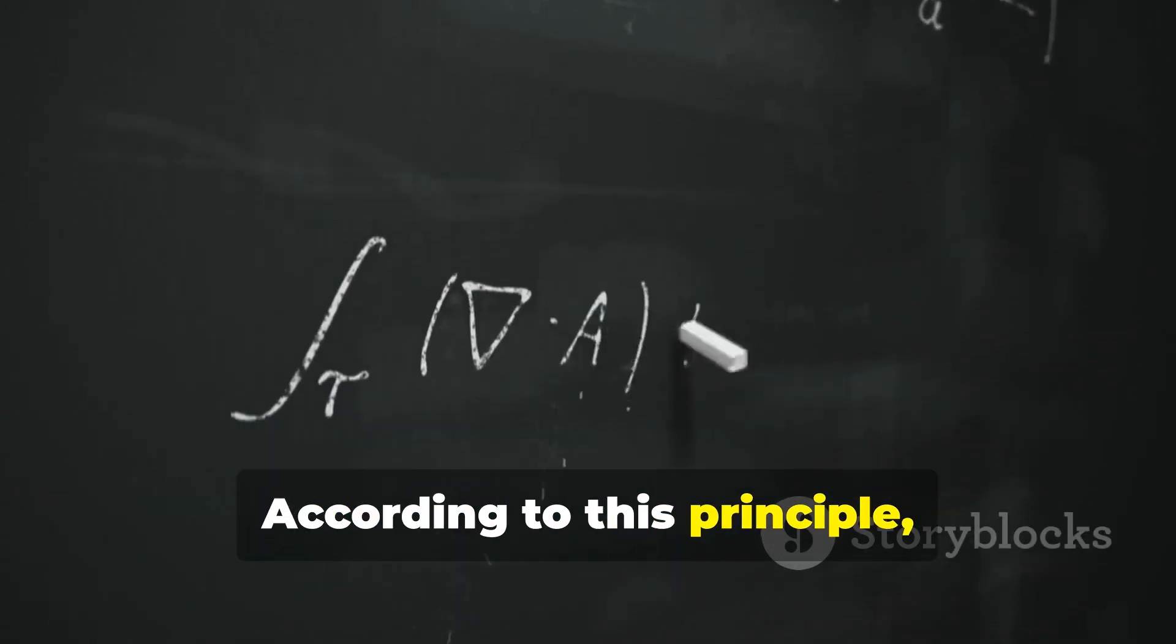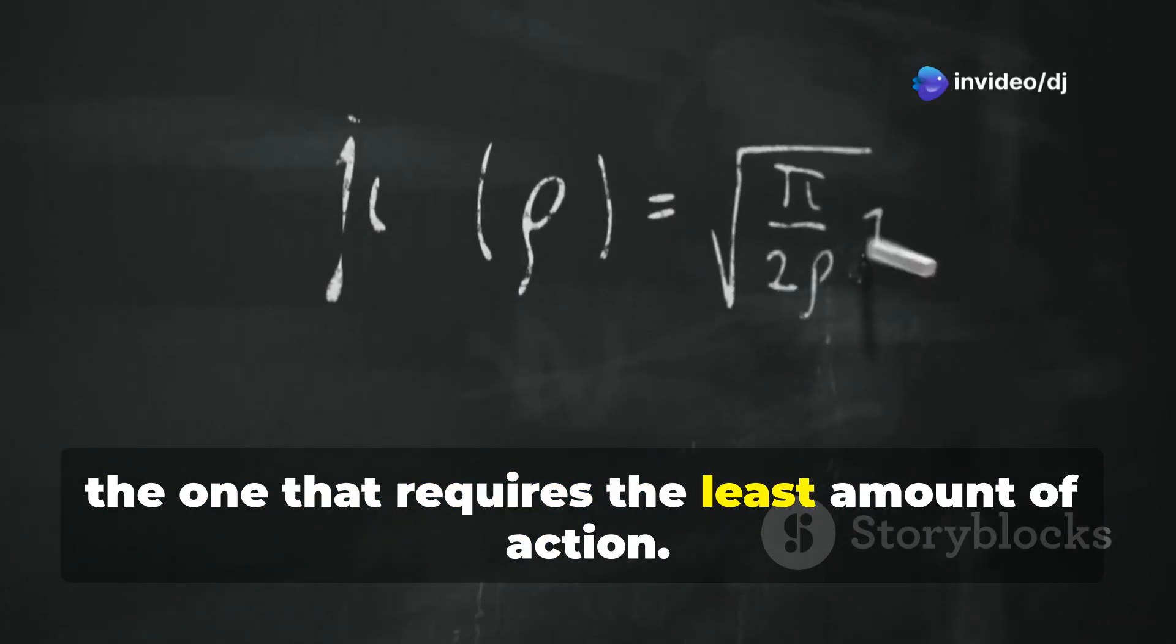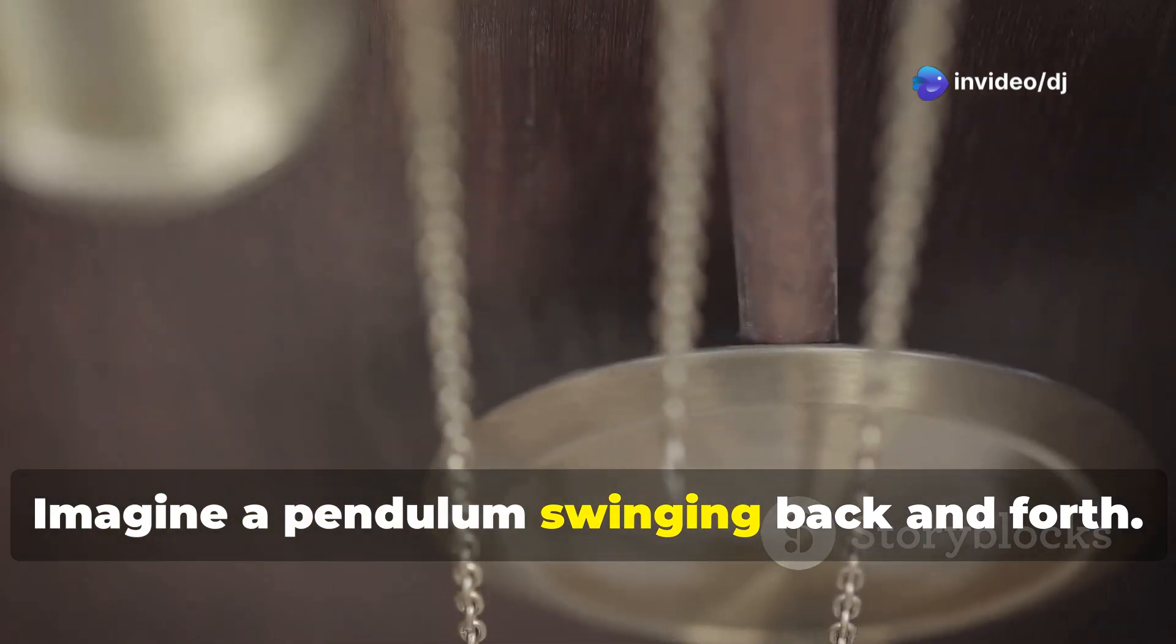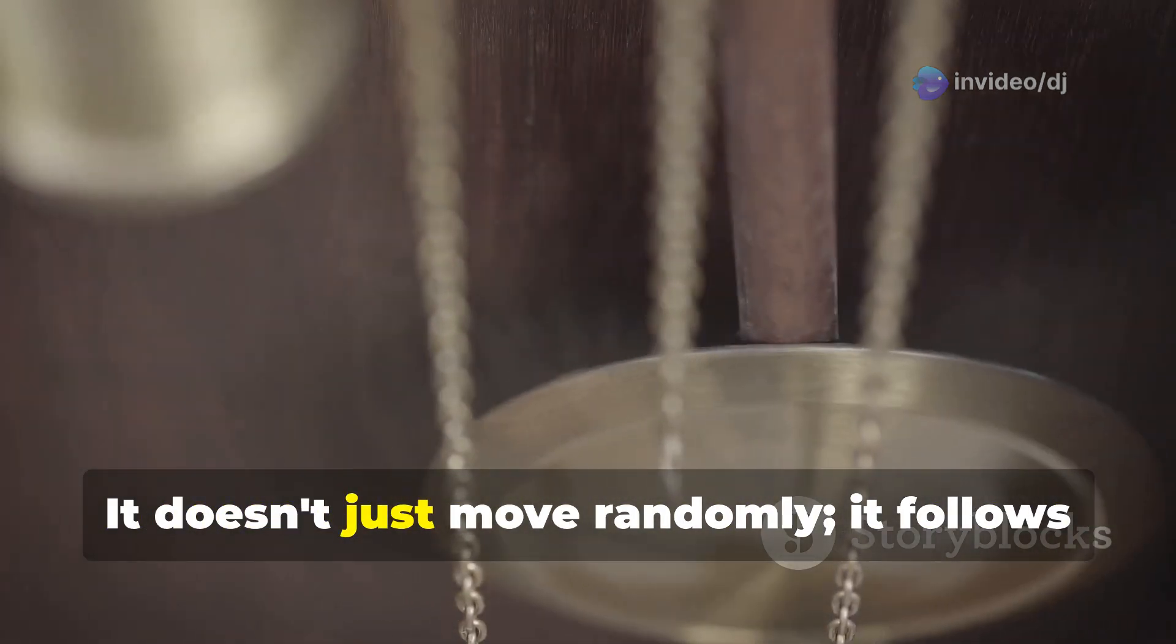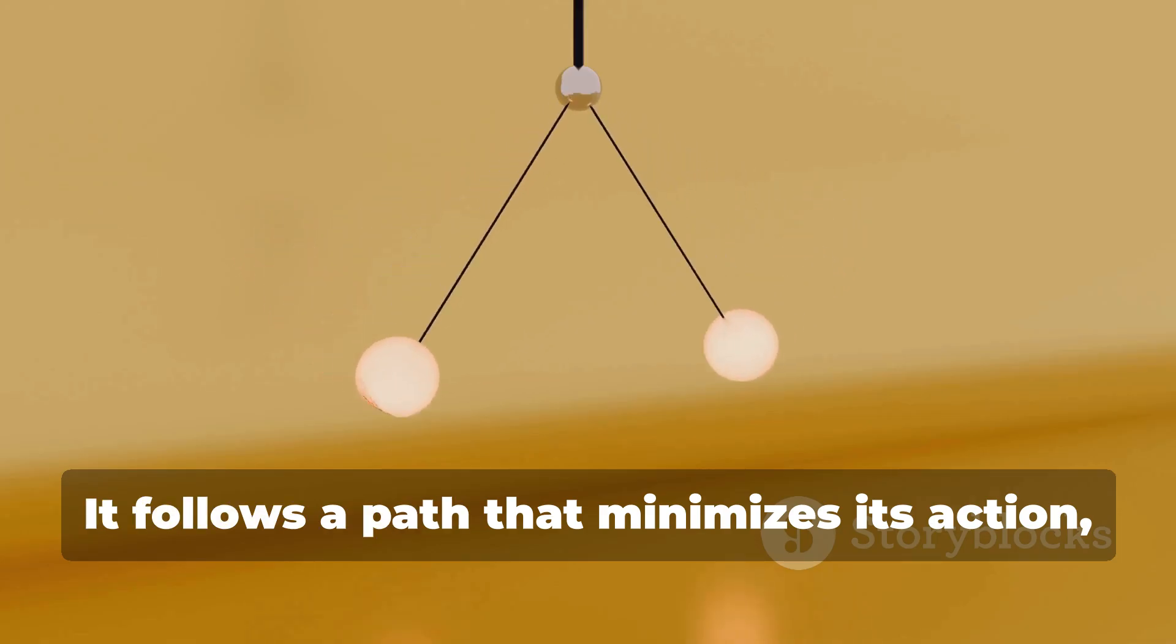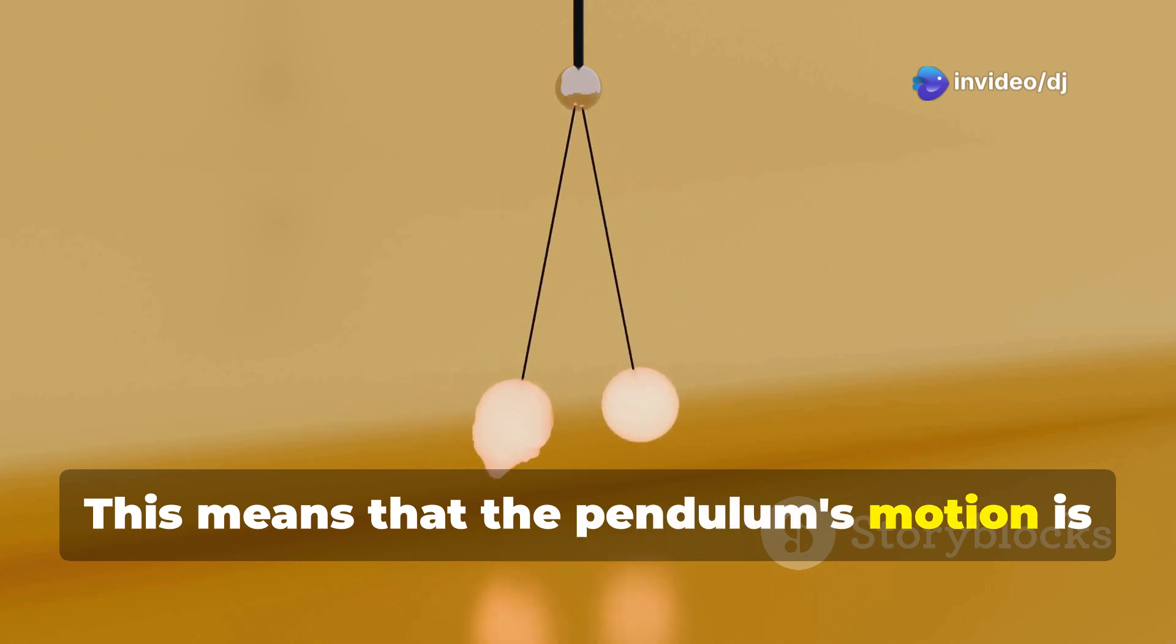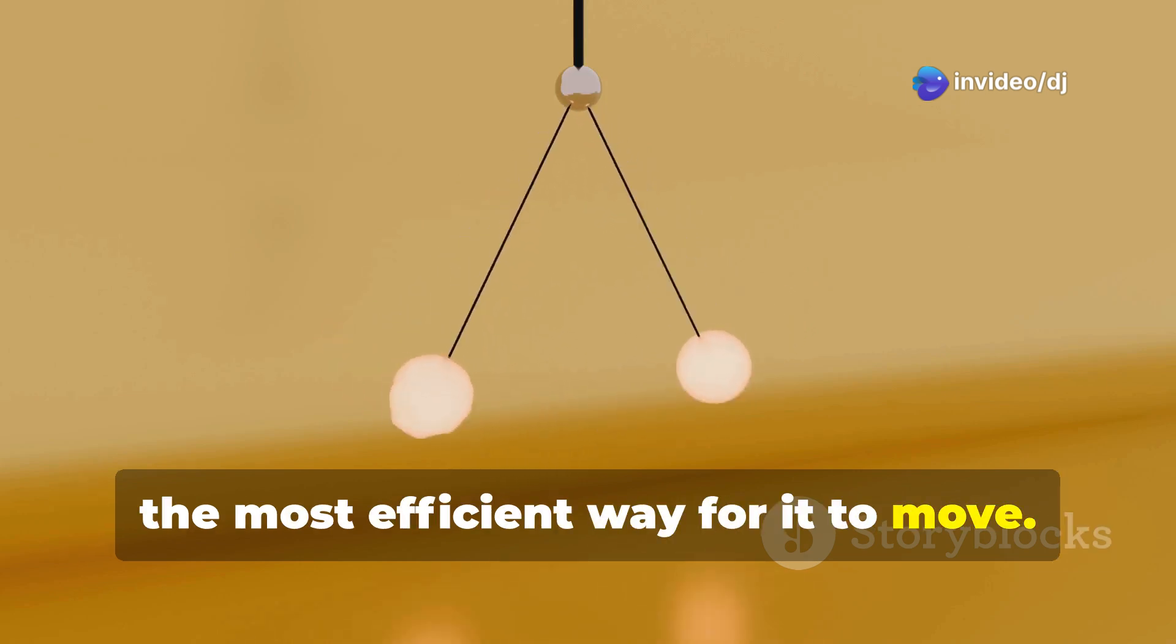According to this principle, nature always finds the most efficient path, the one that requires the least amount of action. Imagine a pendulum swinging back and forth. It doesn't just move randomly, it follows a precise path. It follows a path that minimizes its action, a quantity related to its energy and motion. This means that the pendulum's motion is the most efficient way for it to move.